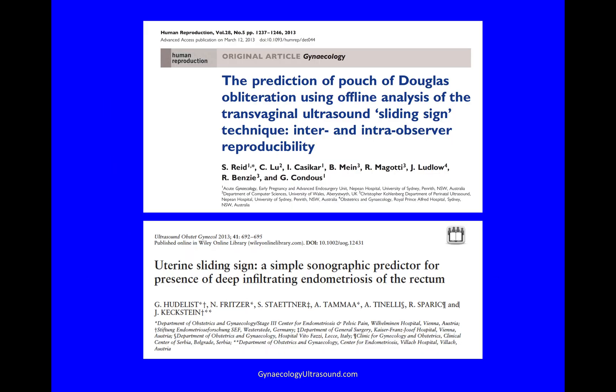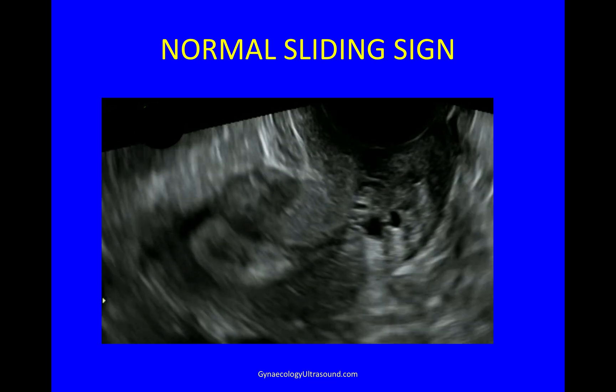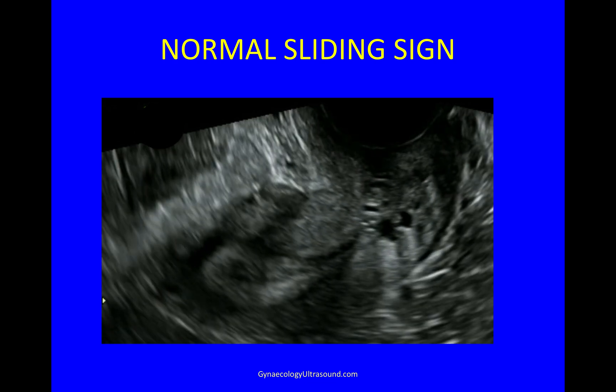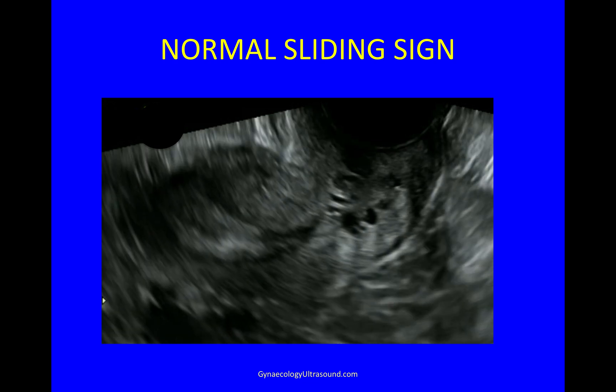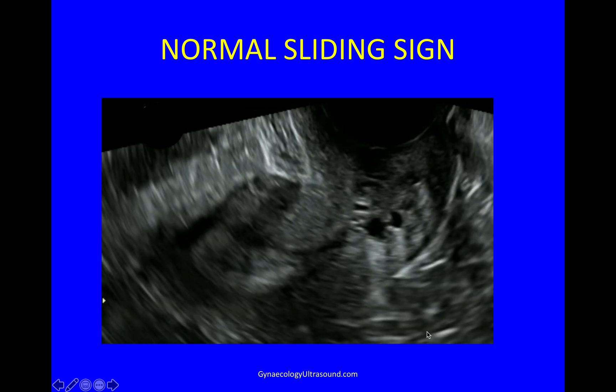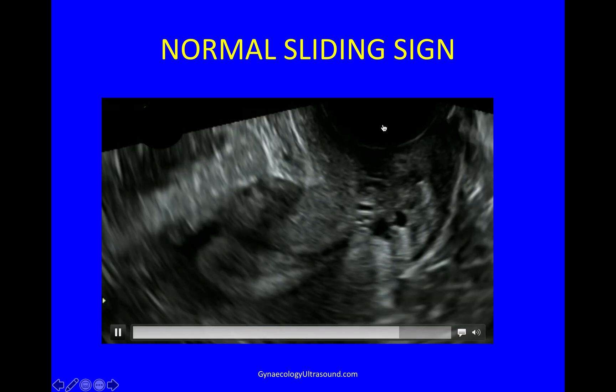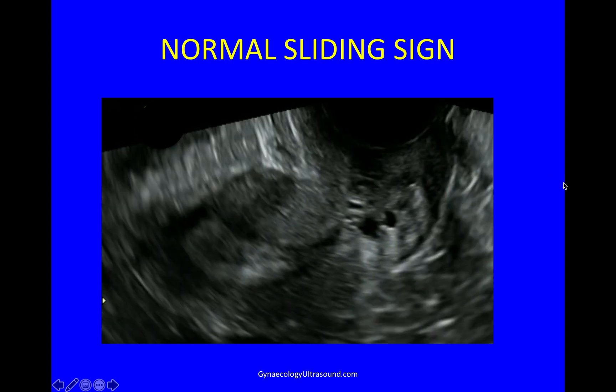The sliding sign should be part of every systematic routine gynae scan. This paper from 2013 described the sliding sign for the first time. This is a normal sliding sign, where the uterus moves one way, and the bowel behind it moves in the opposite way, when you very gently press your probe against the cervix.